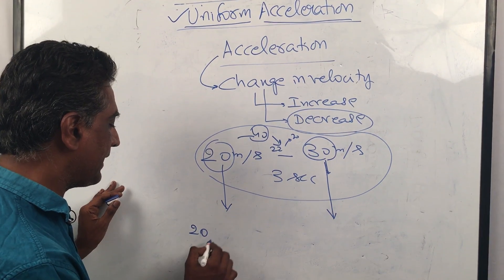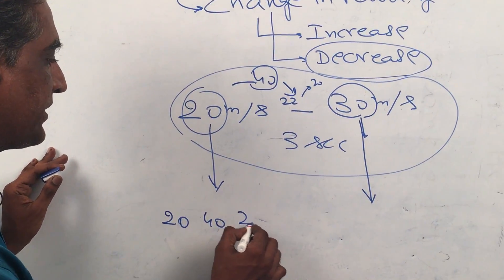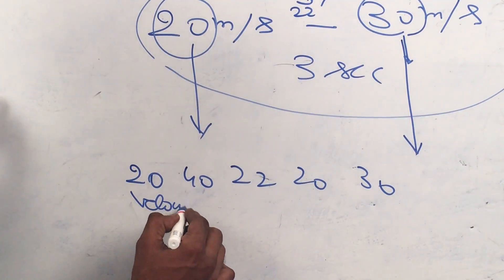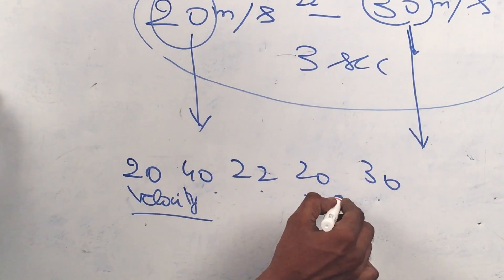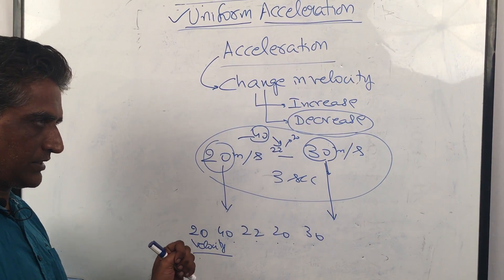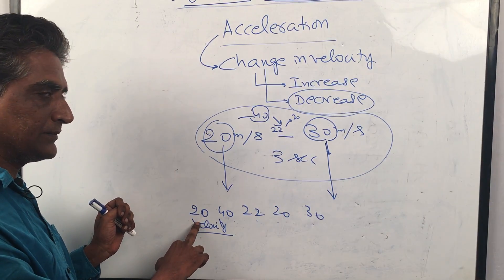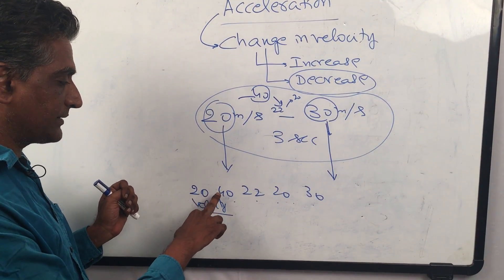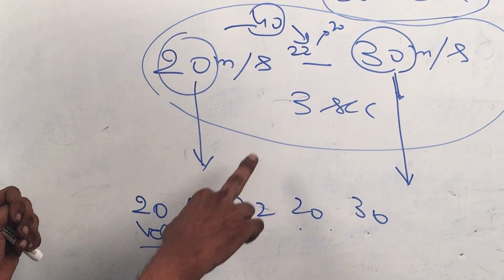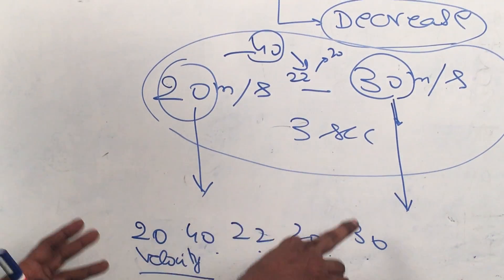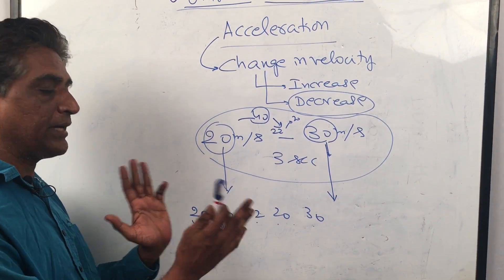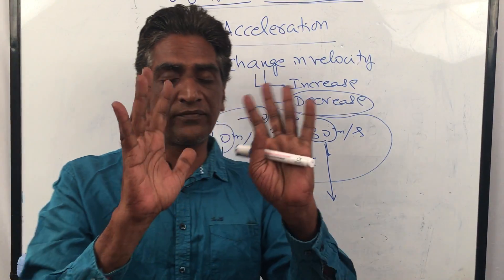There are various numbers: 20, 40, 22, 20, and 30 — this is velocity, not displacement. It is like you are going on a bike and observing your speedometer. You observe it at 20, then after one second at 40, after one second at 22, after another one second at 20, and after one second at 30. Here we cannot get any kind of uniform equation.